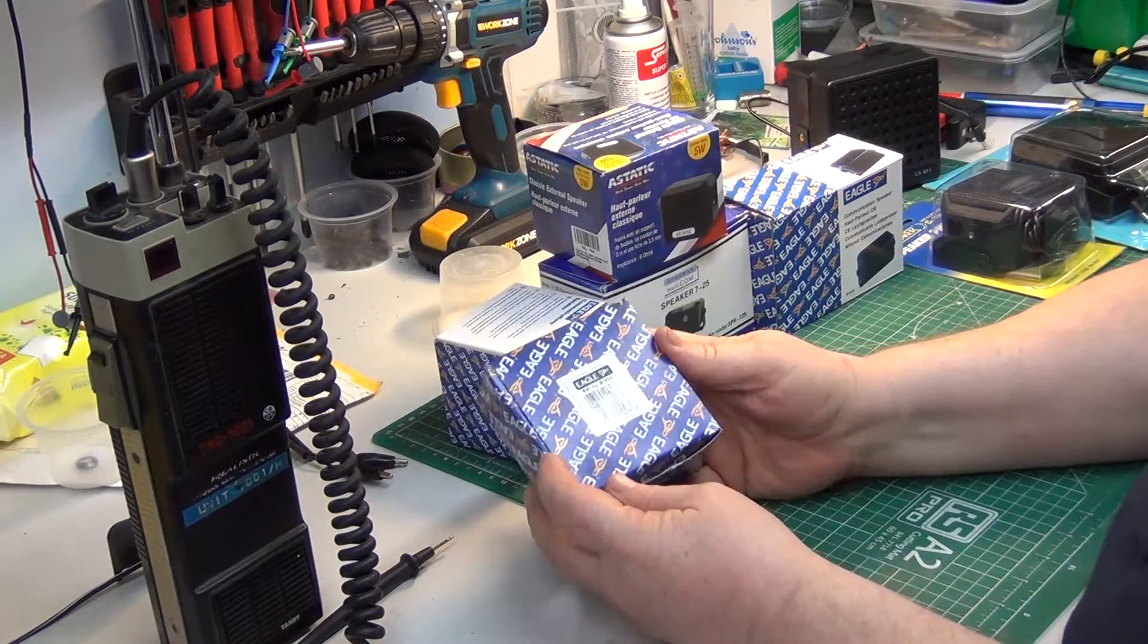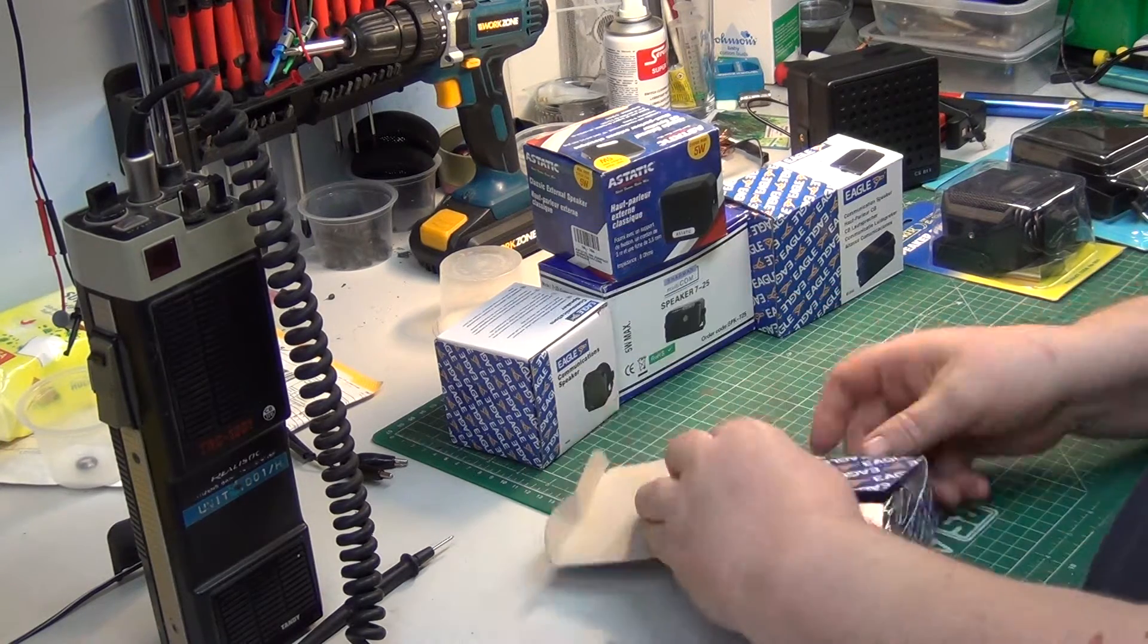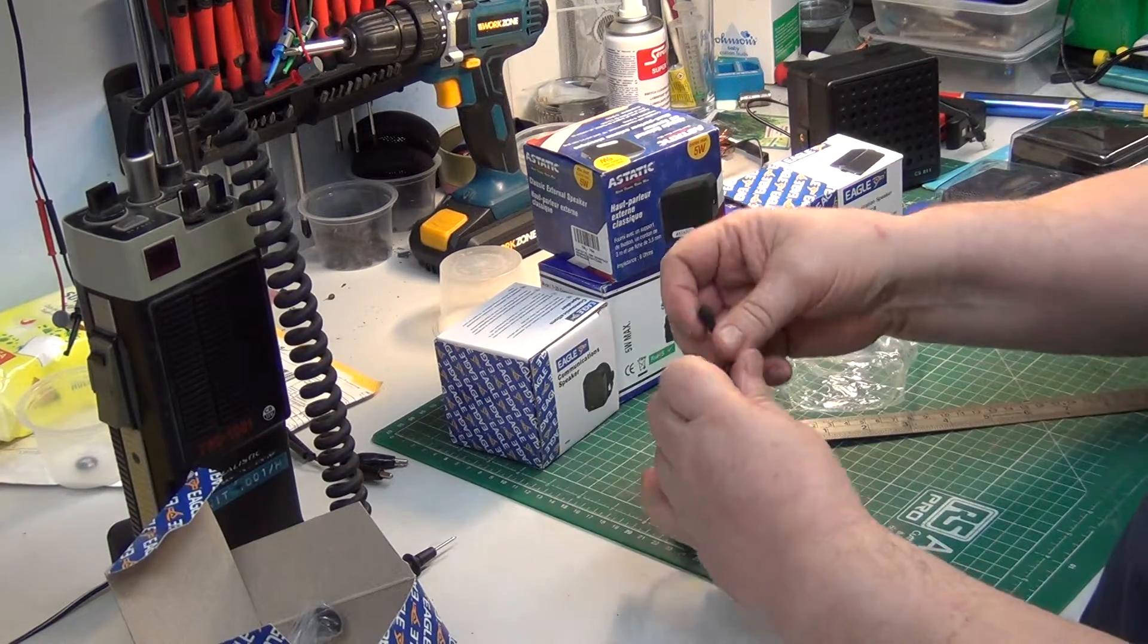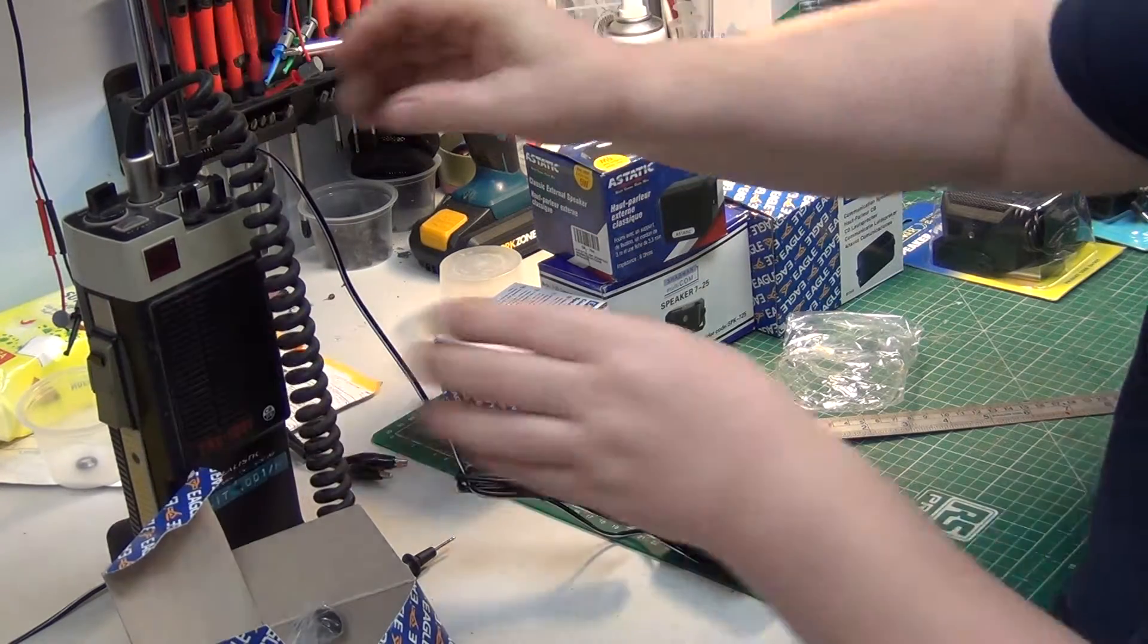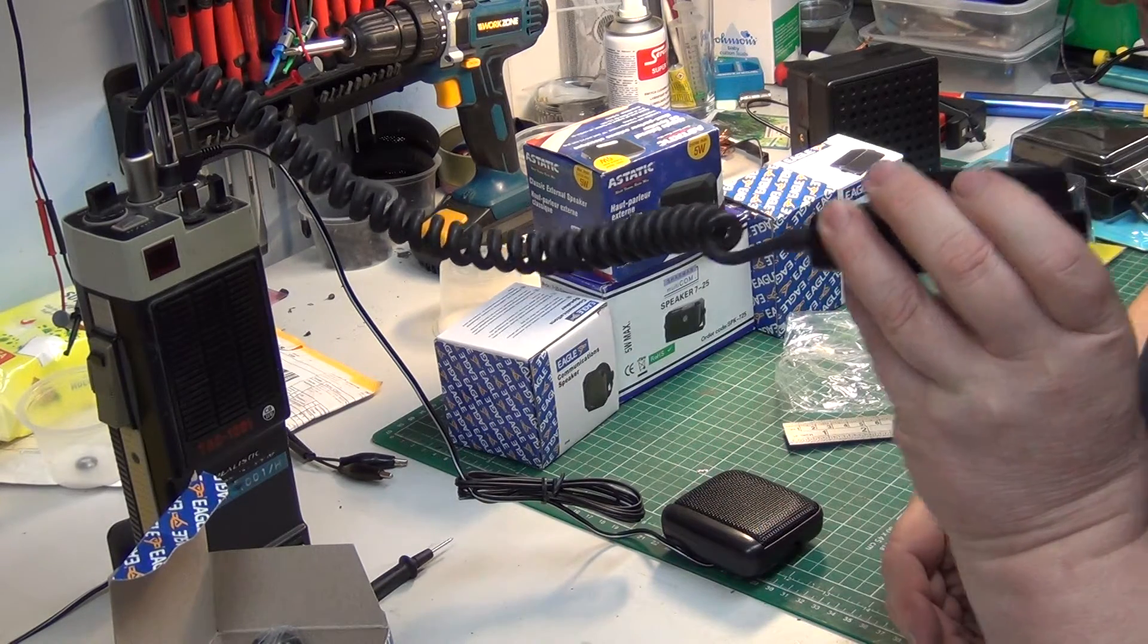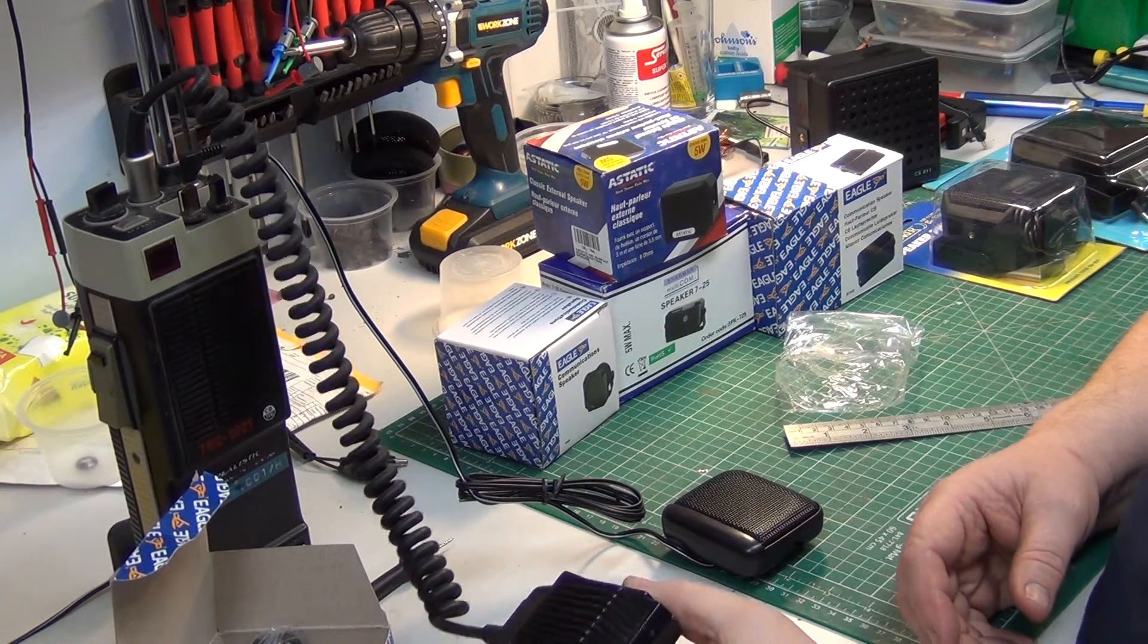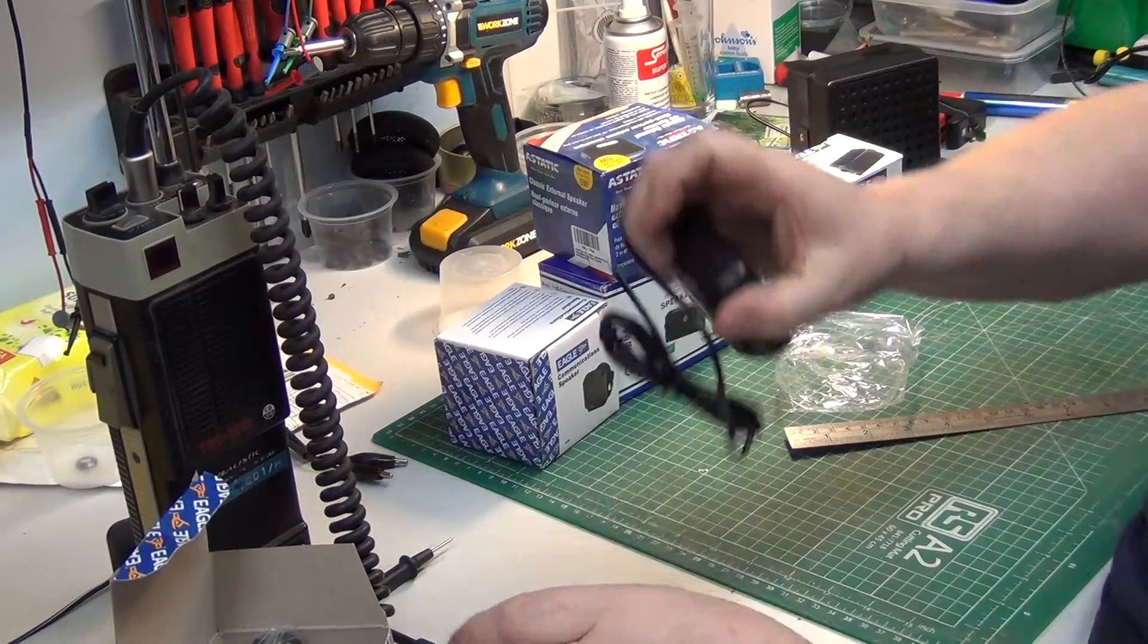The first one I just happen to have got here is the Eagle B183A. It comes with a mounting bracket. It's a right angle plug. Tango 21 with the next one. Right, you say something to me. Testing 1, 2, 3, 4, 5, 5, 4, 3, 2, 1. Roger, thank you. Well, that sounded all right.